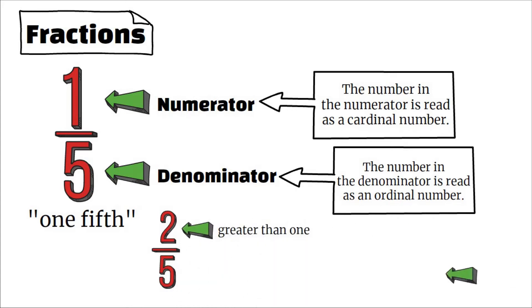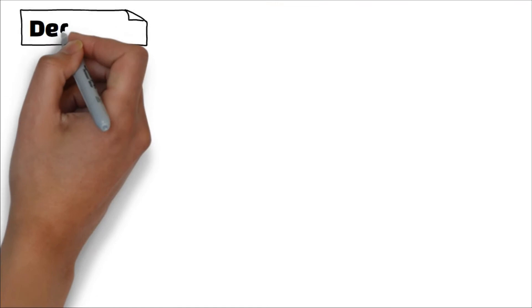If the number in the numerator is greater than one, then we add 's' to the ordinal number in the denominator. For example, two-fifths. Let's now move on to decimals.